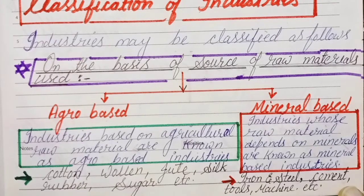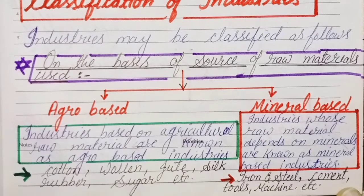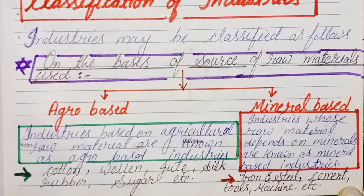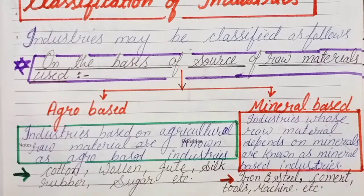The second one is mineral-based industry. These are industries whose raw material depends on minerals. They are known as mineral-based industries. For example, iron and steel — this is a mineral. Also cement industry, tools industry, machine industry, etc. — all of these depend on minerals, so we call them mineral-based industries.